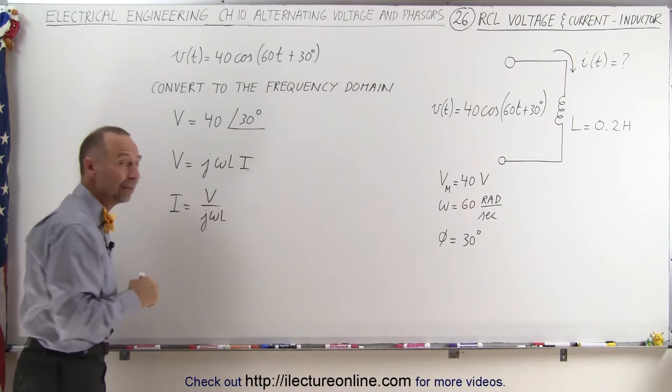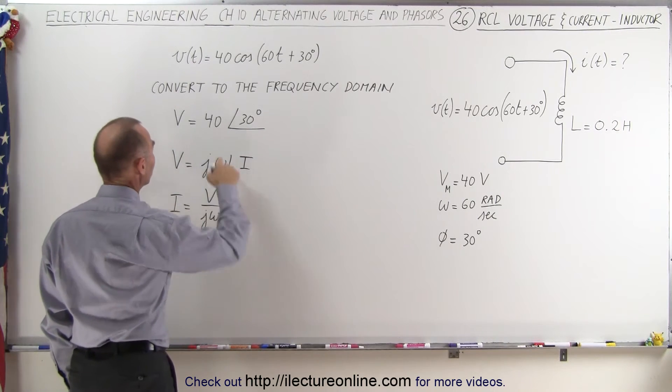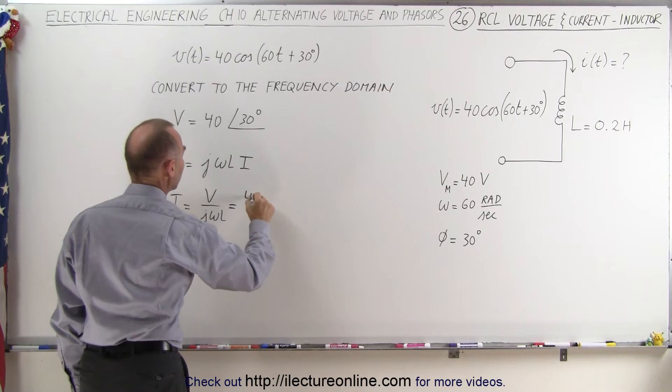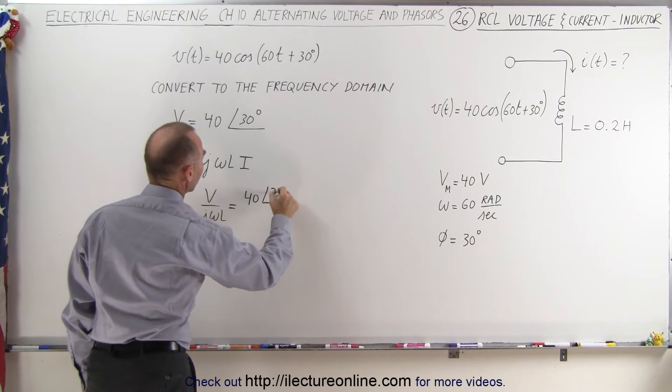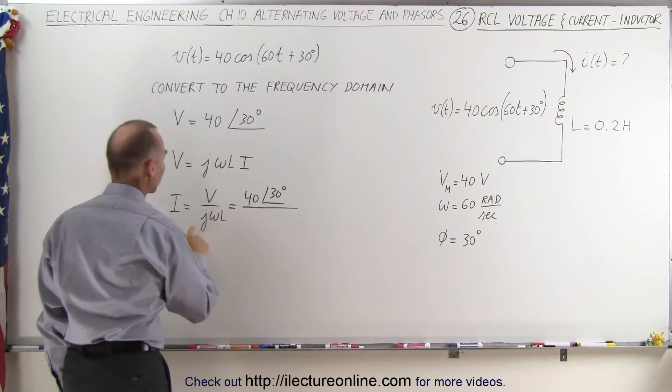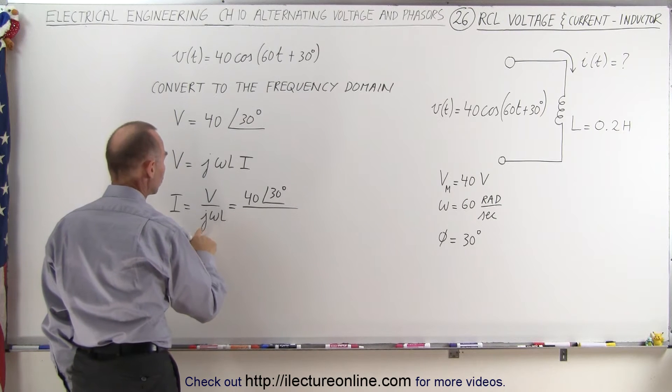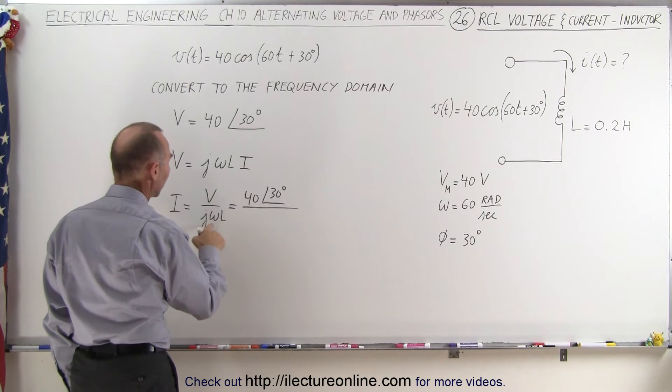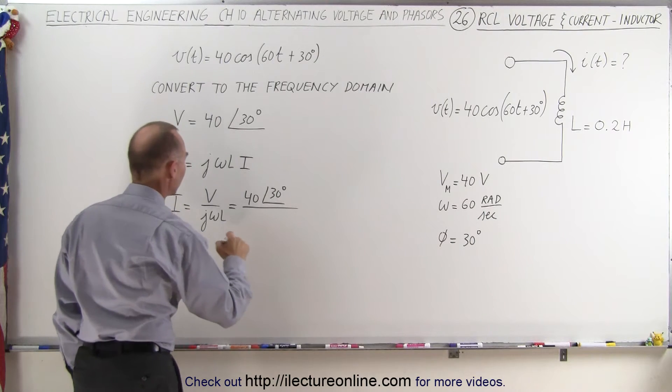Now, we're going to go ahead and calculate this. So, here we have the voltage in the frequency domain, that's 40 and a phase angle of 30 degrees, and then we divide that by j omega L. Now, j here, that's a phase angle of 90 degrees, and omega times L, let's see here, omega...